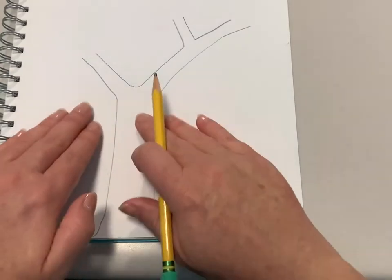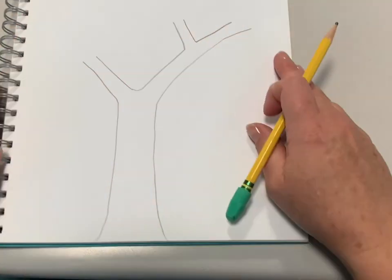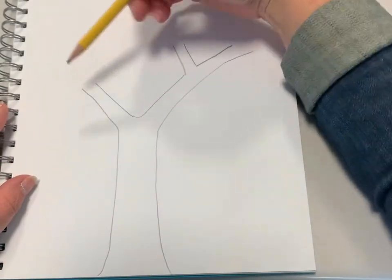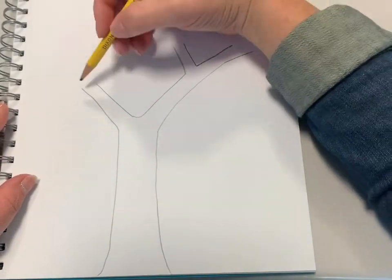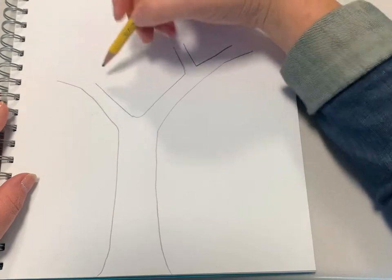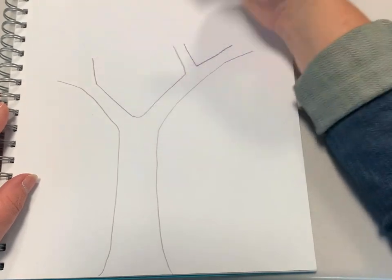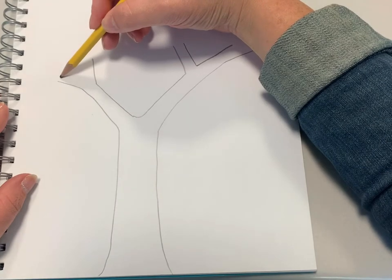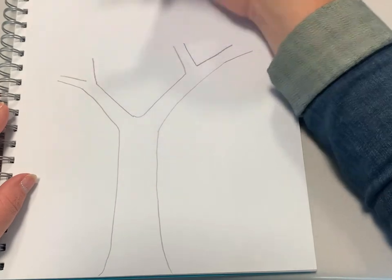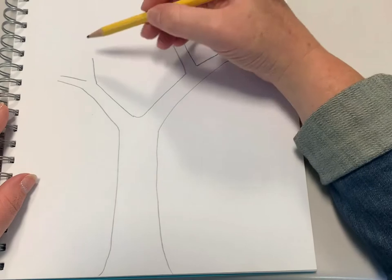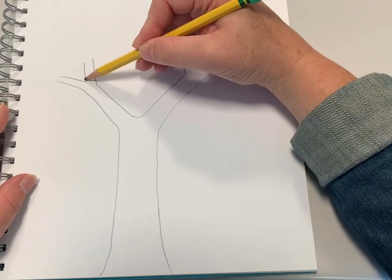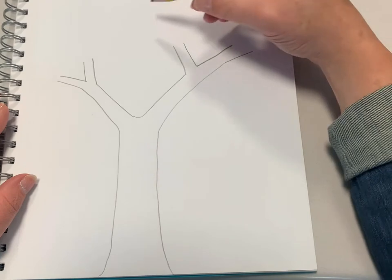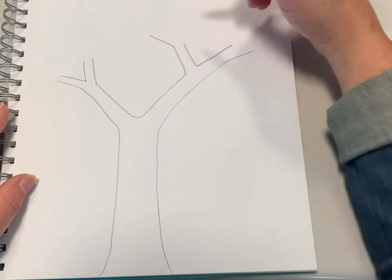So we're going to go back to the original branch and make the lines come out. And we're going to add our copycat line there and another one there. So it kind of looks like a letter Y, a capital letter Y. We're going to branch out here and here.